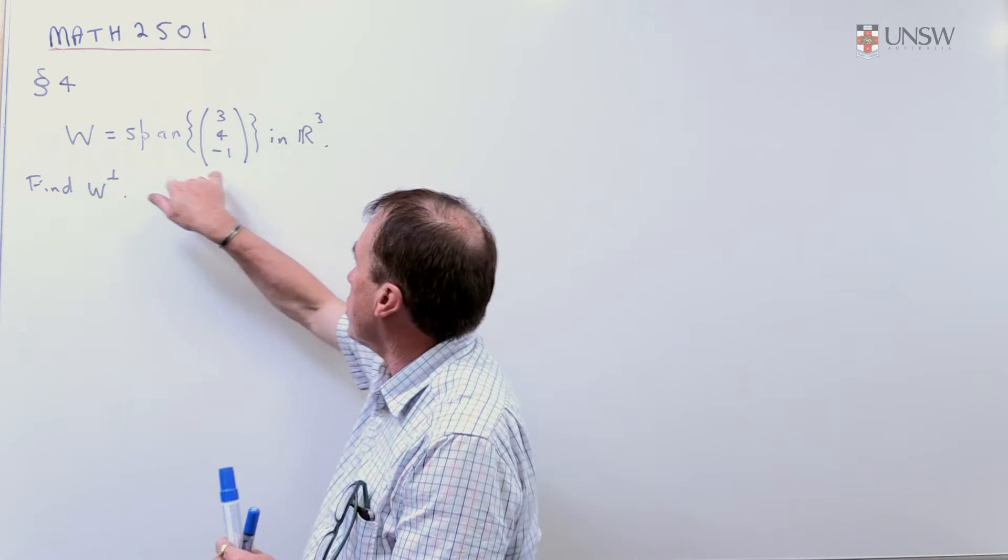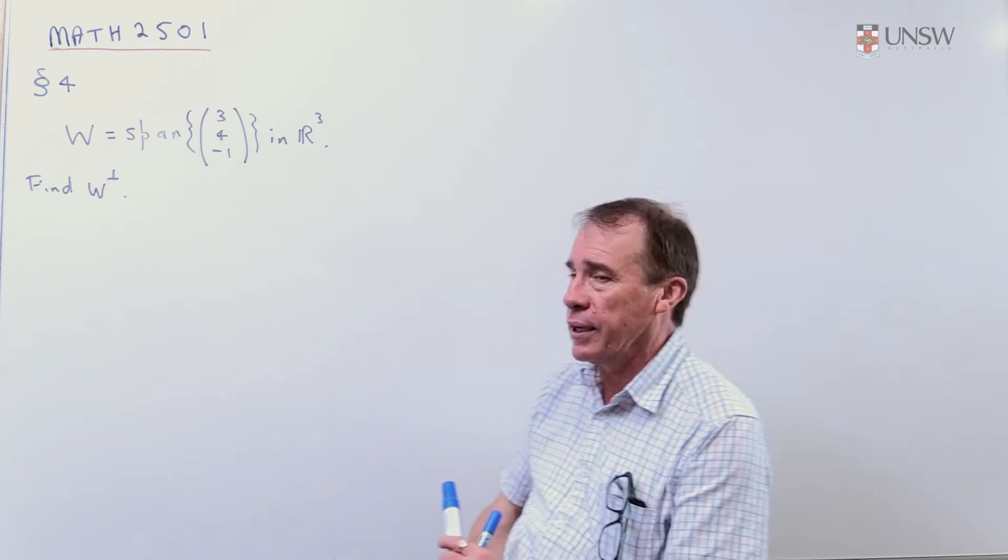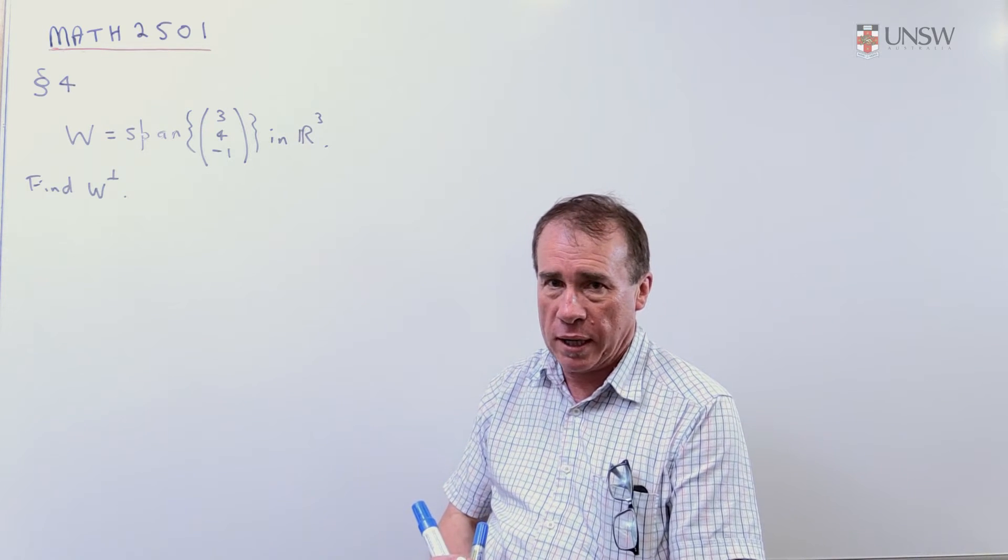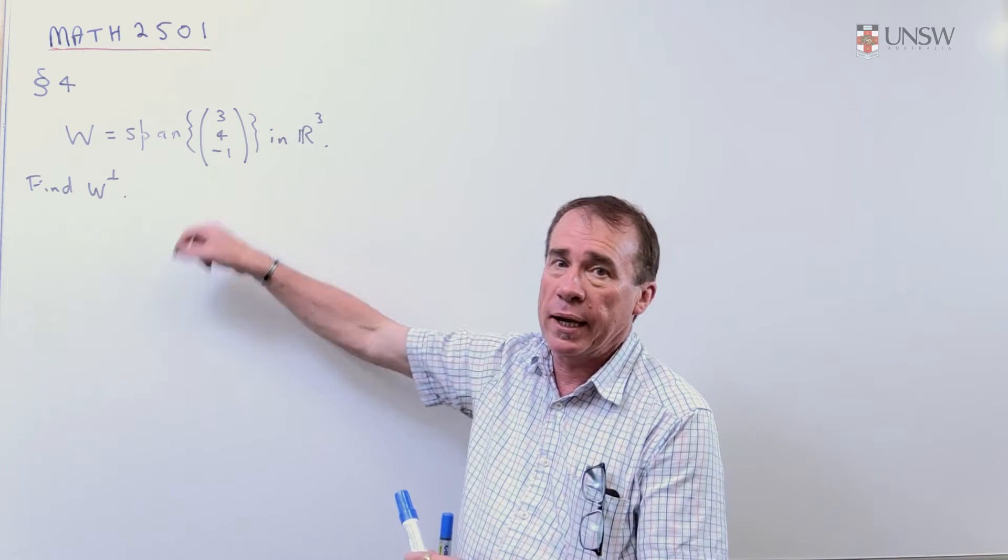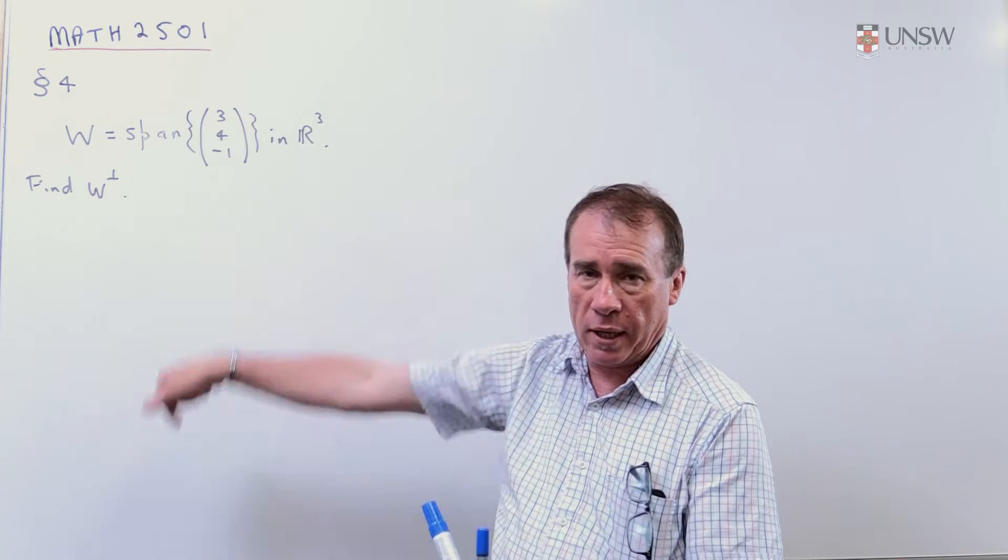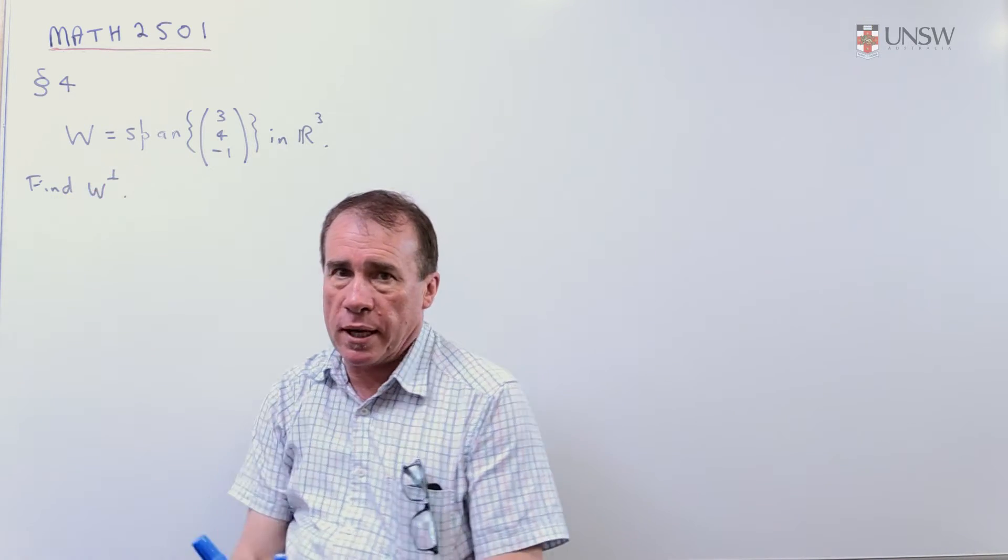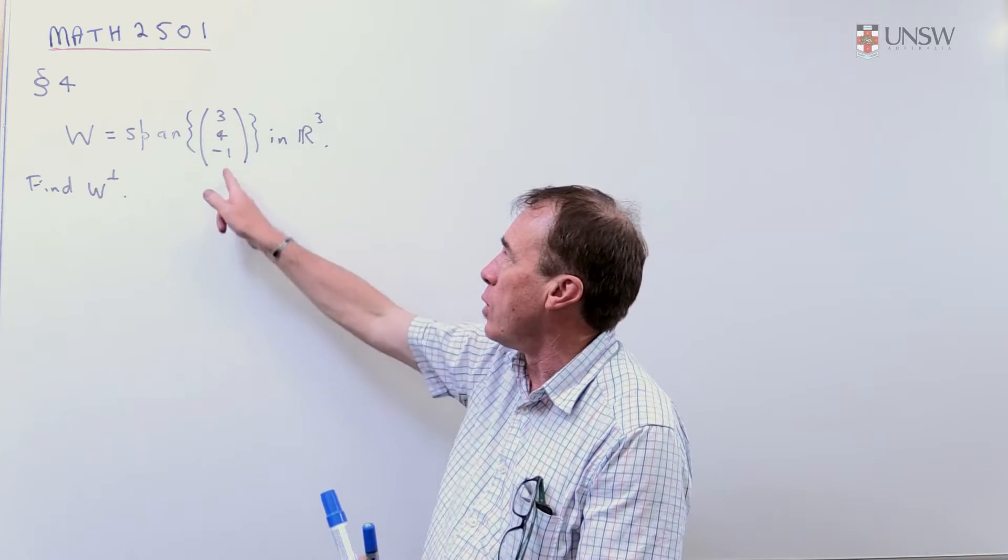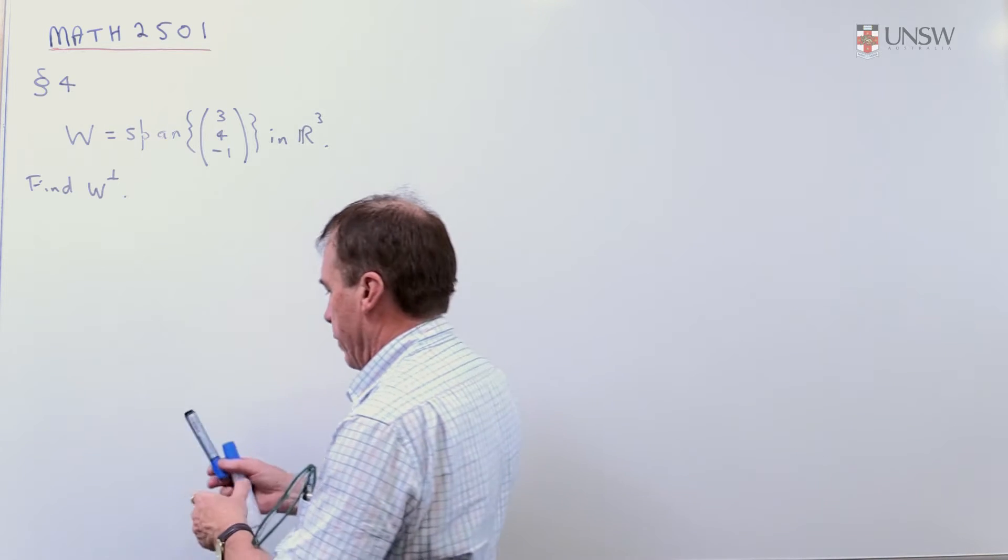Here I have W, which is the span of this vector in R³. I hope at this stage you're immediately thinking of the geometry underlying this—that the span of this vector is going to be a line in R³. This perpendicular space are all the vectors that are perpendicular to this line. Think about the geometry of it.